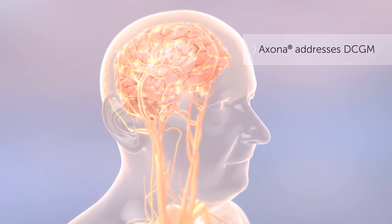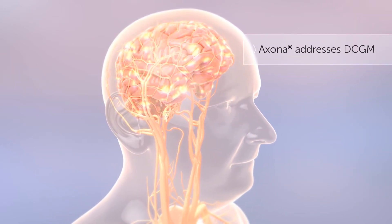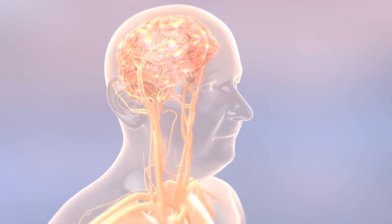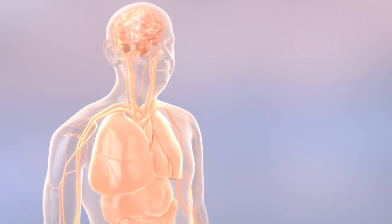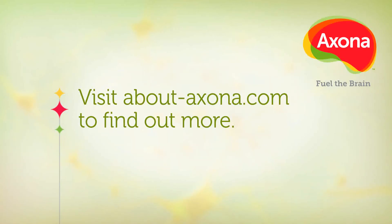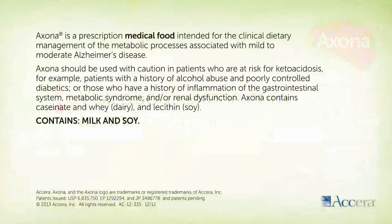AXONA is the only available medical product that addresses diminished cerebral glucose metabolism in Alzheimer's disease. Getting started with AXONA is simple. Visit aboutaxona.com to request your free AXONA patient starter kits.